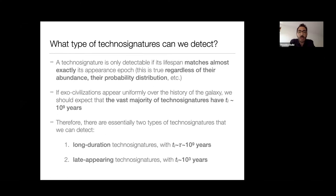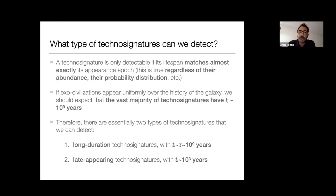So, to answer the question of what type of technosignatures we can detect: a technosignature is only detectable if the lifespan of the technosignature matches almost exactly its appearance epoch. This is not something that is true statistically — it is true regardless of the abundance or probability distribution, even if you only have one. You have to meet this causal constraint.